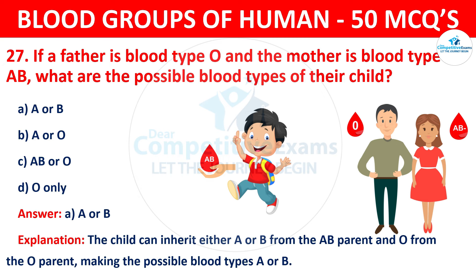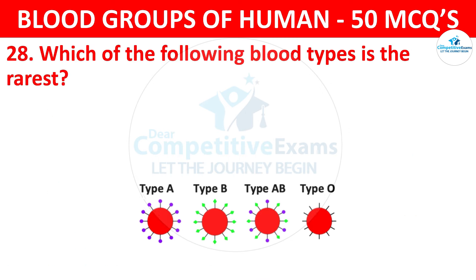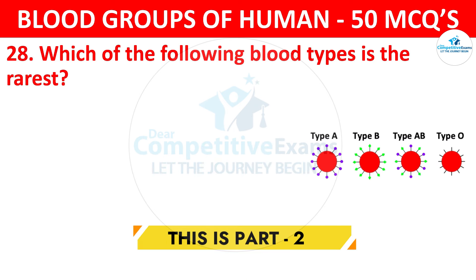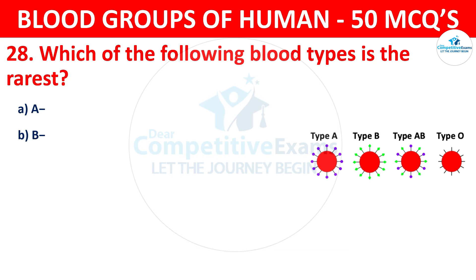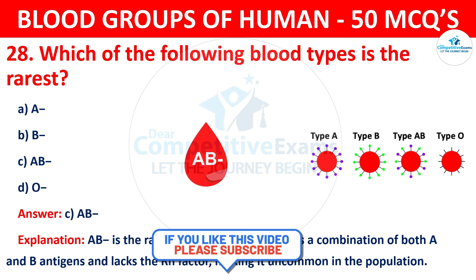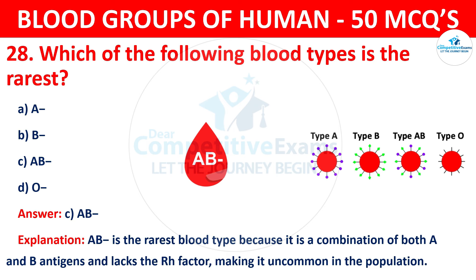Question 28 (rarest blood type): Which of the following blood types is the rarest? The correct answer is C, AB negative. AB negative is the rarest blood type because it is a combination of both A and B antigens and lacks the RH factor, making it uncommon in the population.